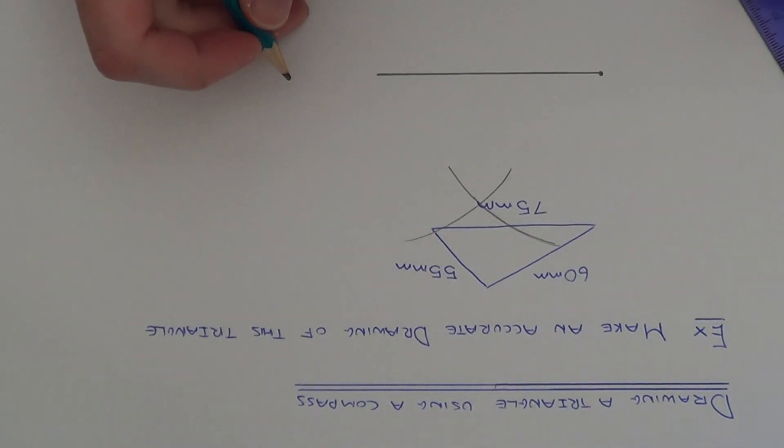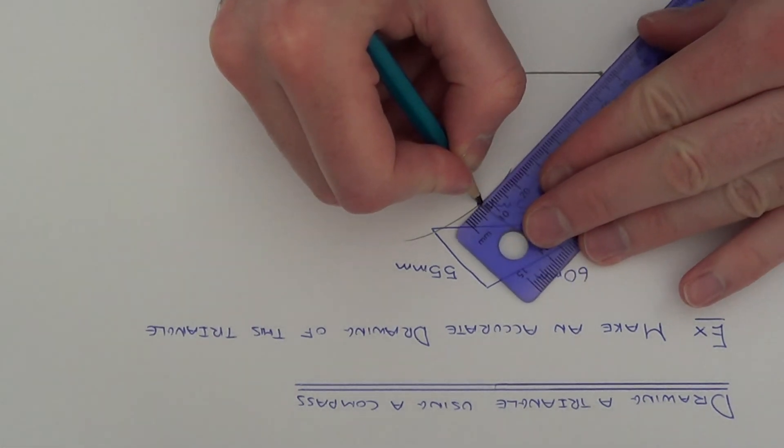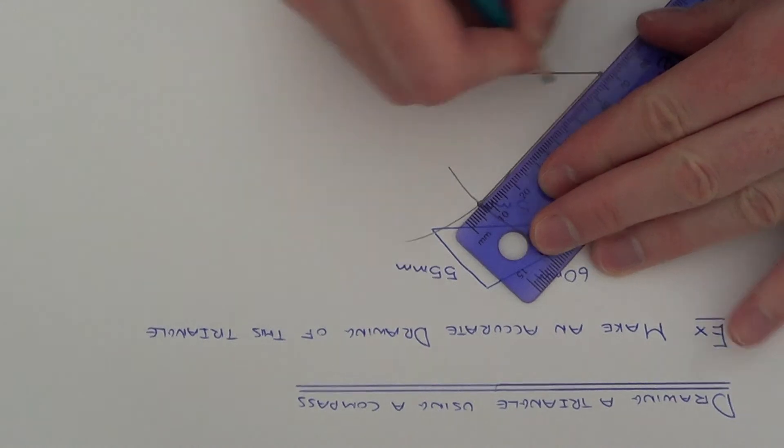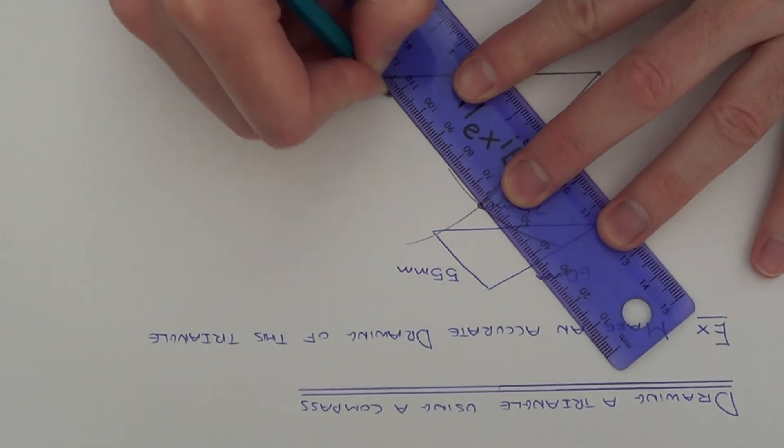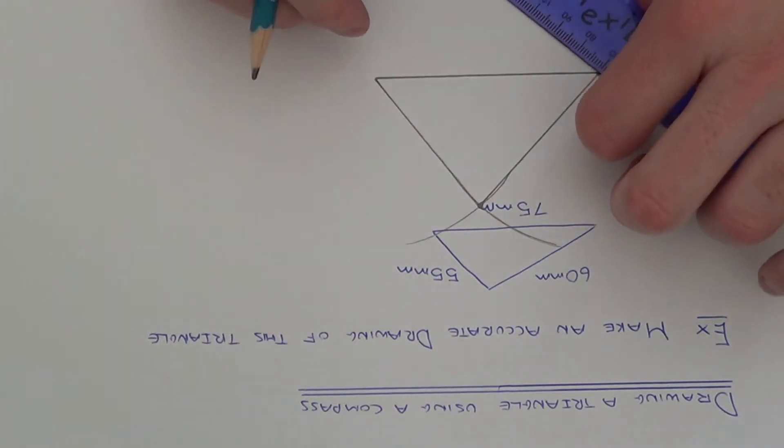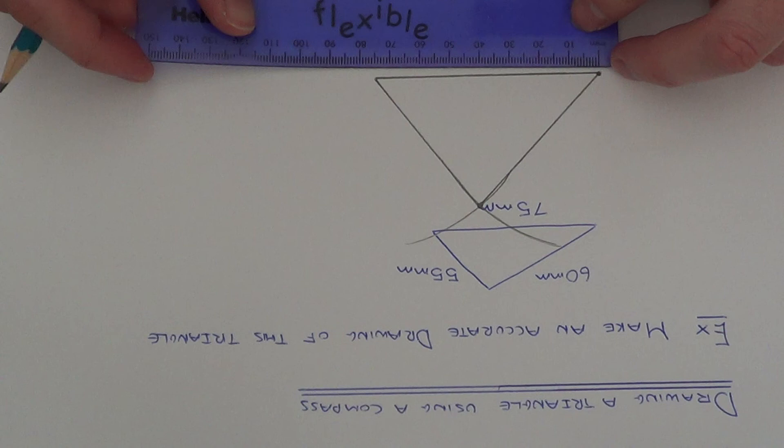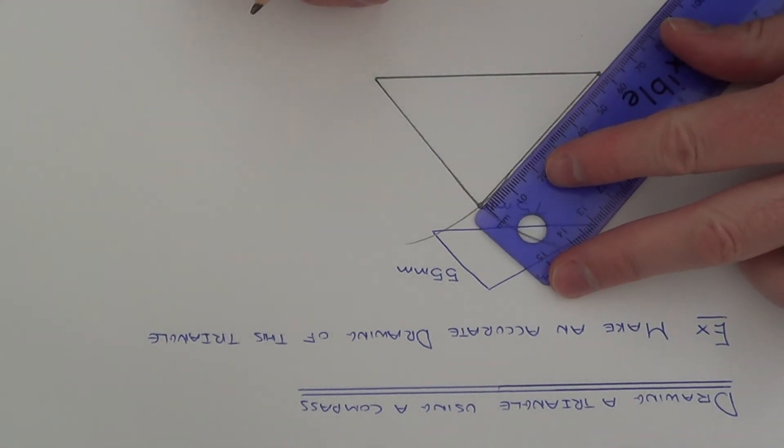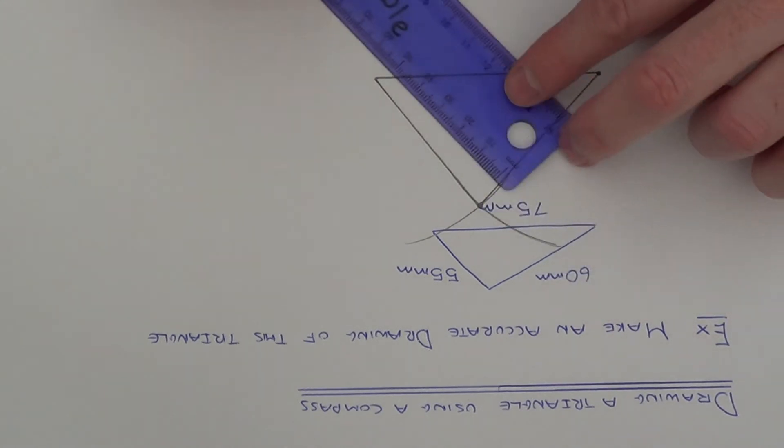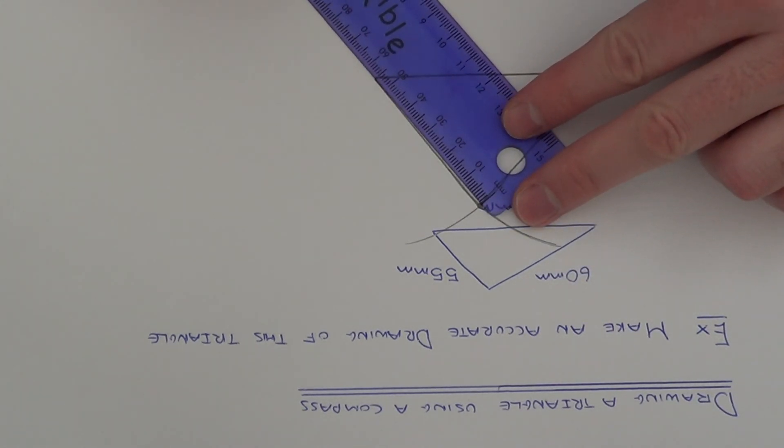Once this is done, you can draw your two lines back up to the corners of the line. And this triangle is now accurately drawn. You can just check that it's correct. The bottom edge is 75mm, the left hand side edge is 60mm, and the right hand side edge is 55mm.